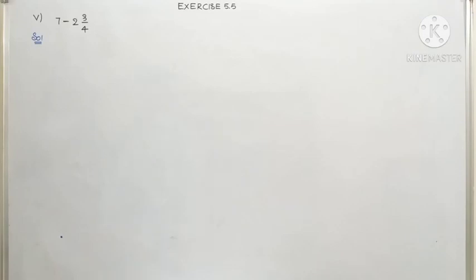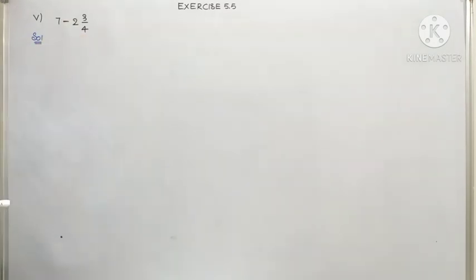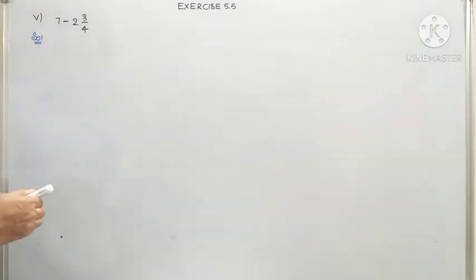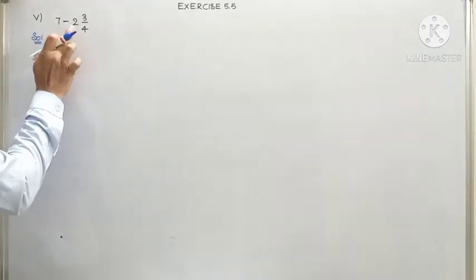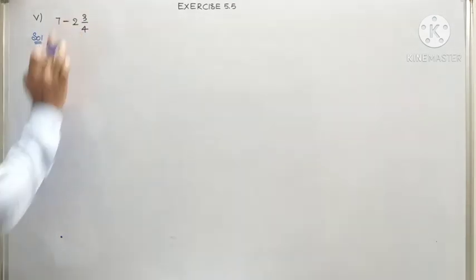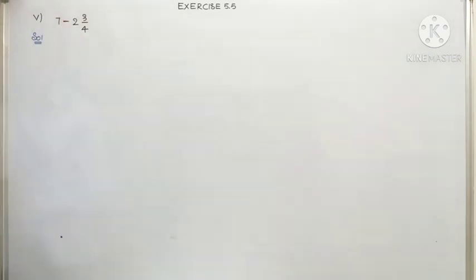A very pleasant morning children. We have been discussing finding the difference between a whole number and a mixed fraction. I am at the fifth question: 7 minus 2¾ — a whole number and a mixed fraction.